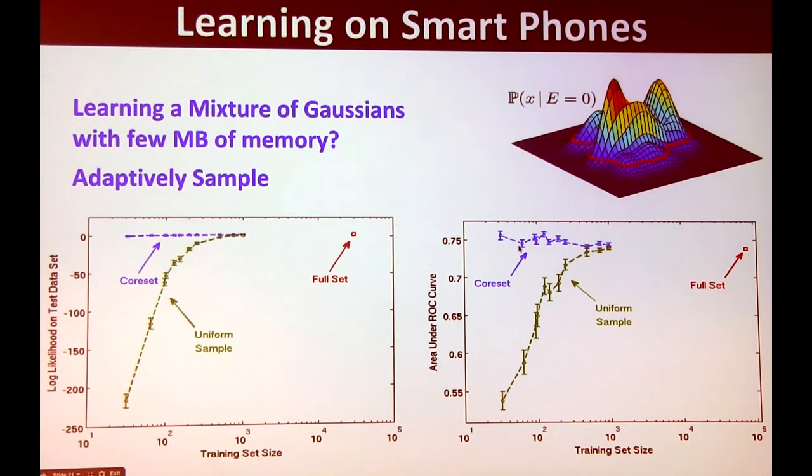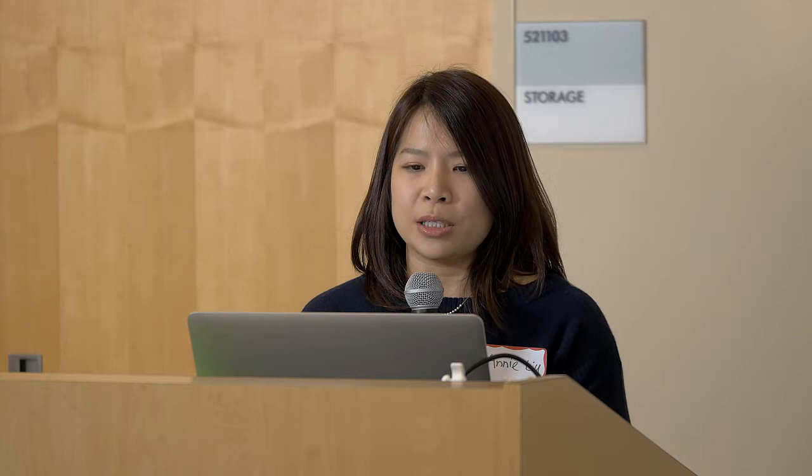We also validated this using a simulation based on the historical Baja M7.2 earthquake, overlaying phone noise on top of that signal. Doing purely hypothesis testing gives a pale green curve, but using anomaly detection with the Gaussian mixture model gives a much better result.